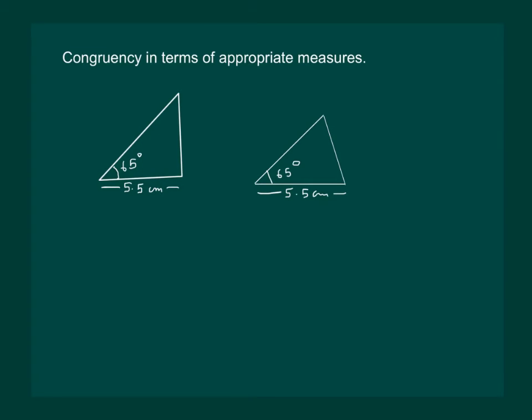That means some more information is required in this triangle so that we can draw a congruent triangle to it. So let us modify our statement.